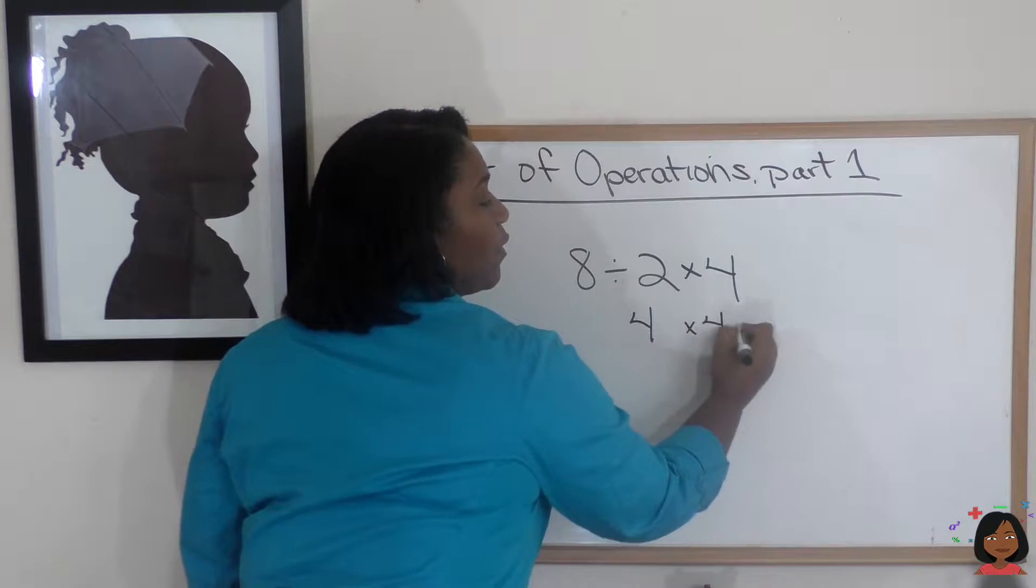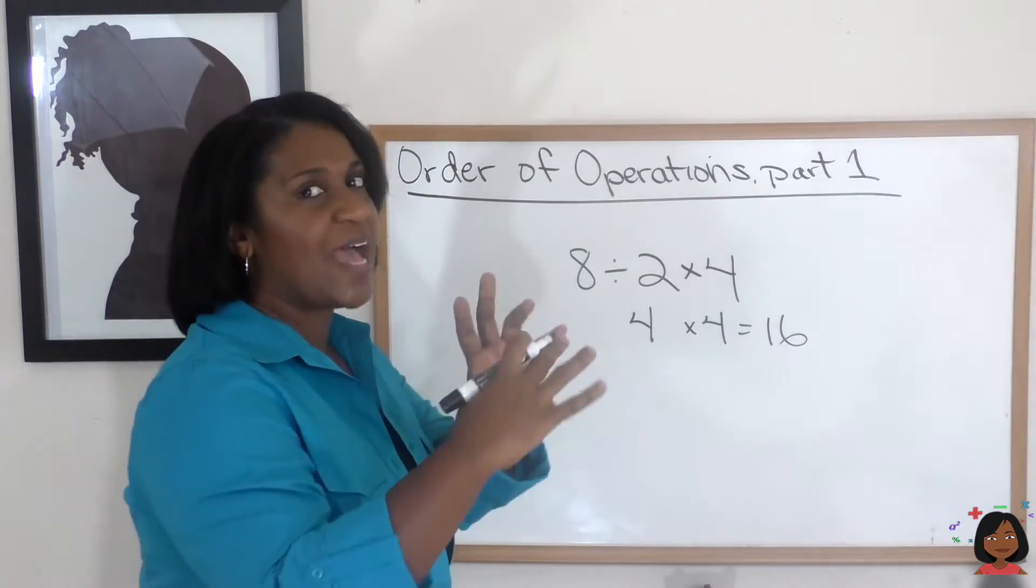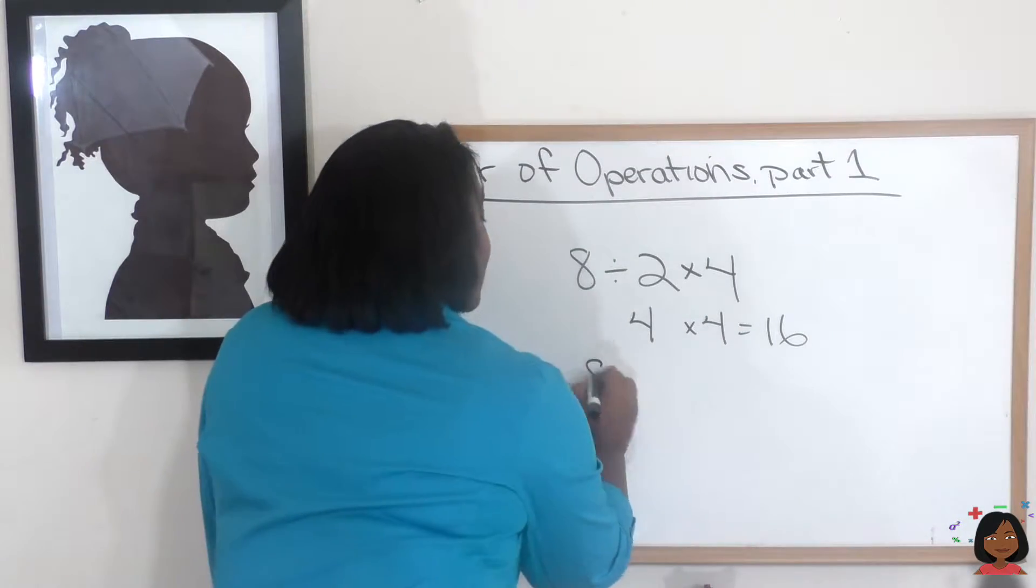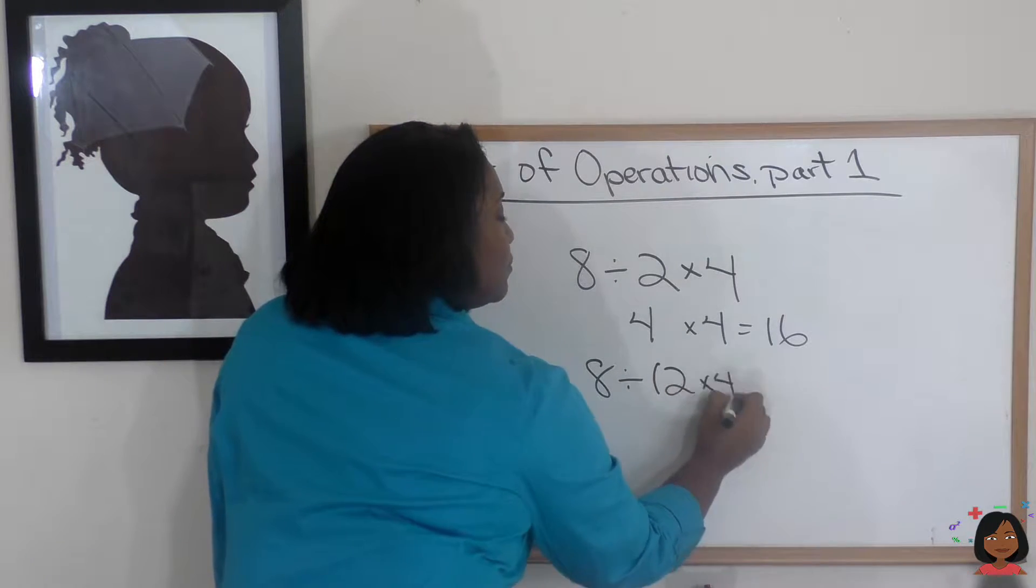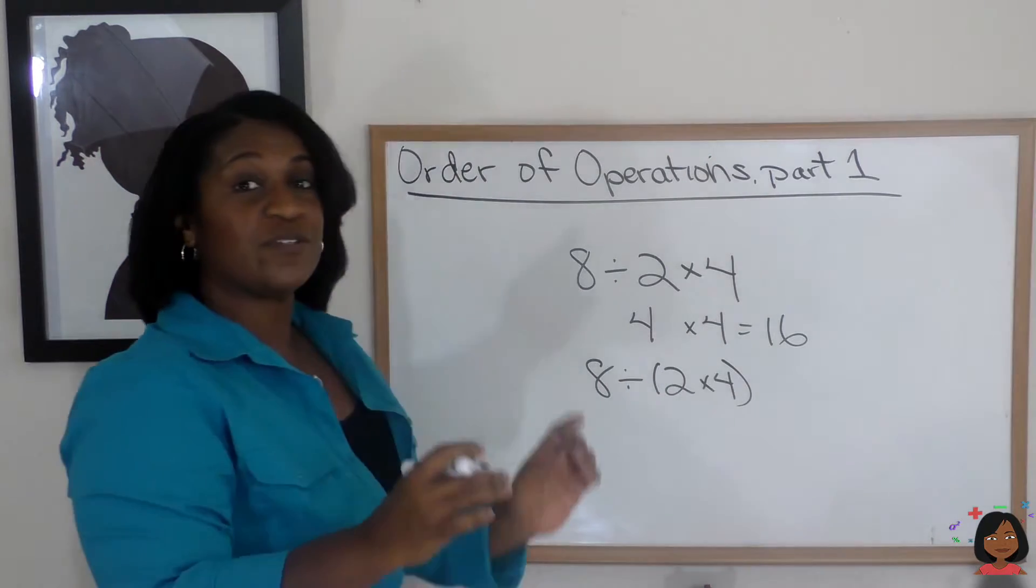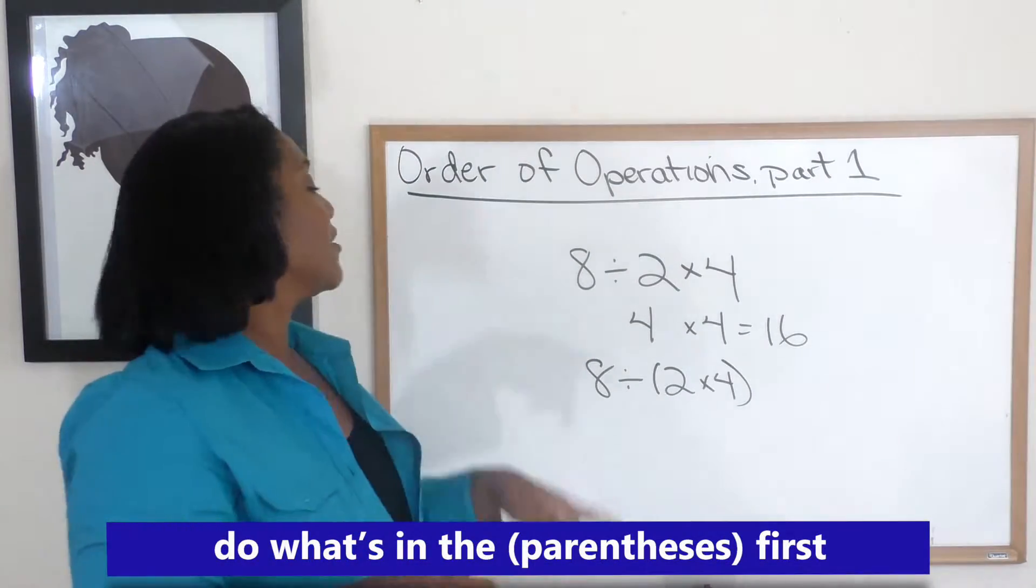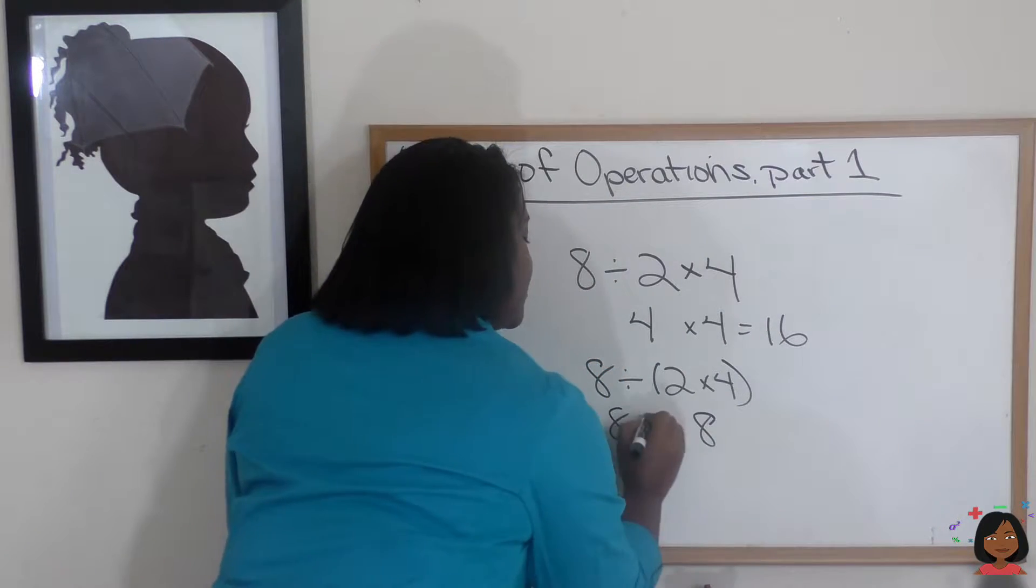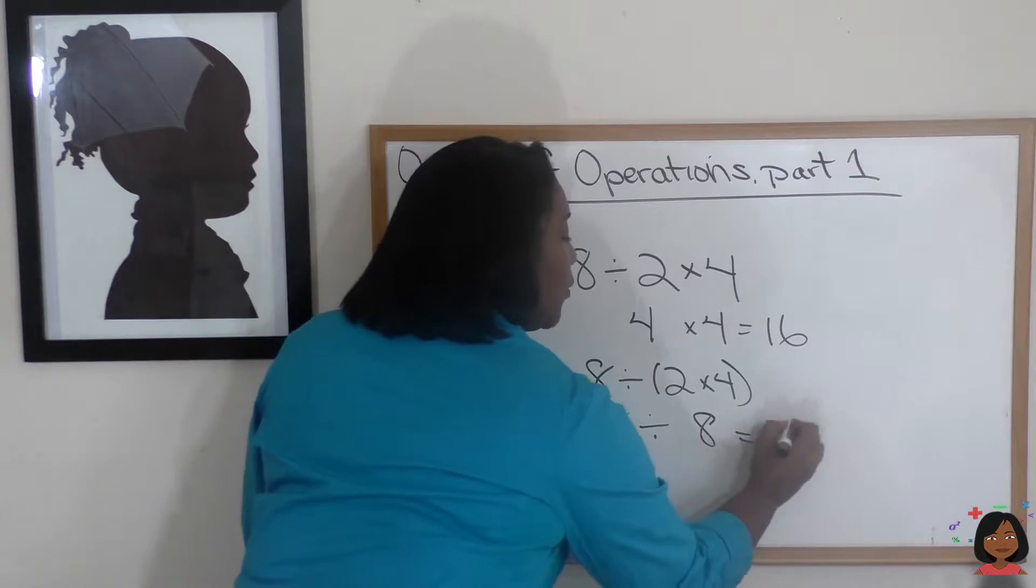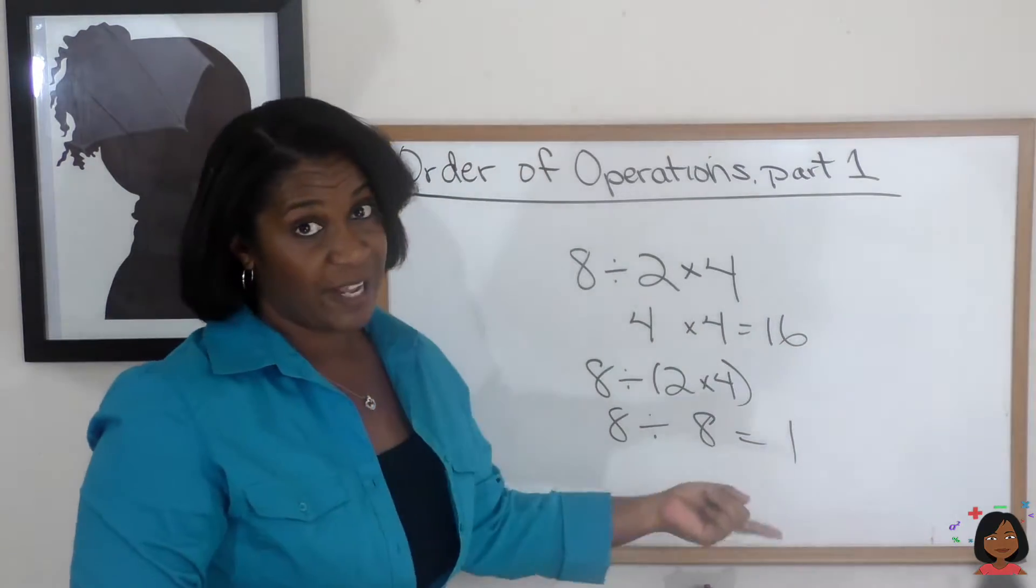4 times 4 equals 16. Now let's take those same numbers and add some parentheses. And I'm going to add my parentheses around the 2 and the 4. Which means we always do what? We do what's in the parentheses first. So here we go. 4 times 2 is 8. 8 divided by 8 we know is 1. Look at that. Same numbers, different answer.